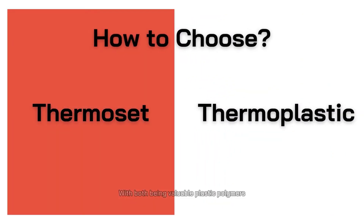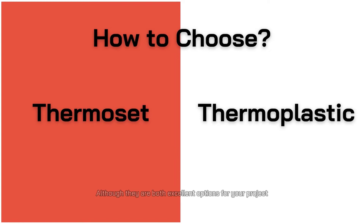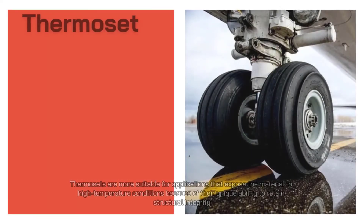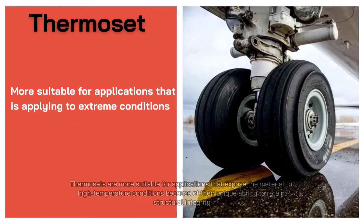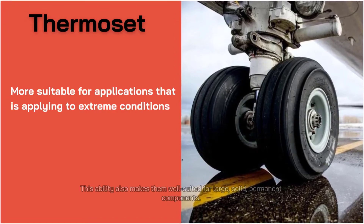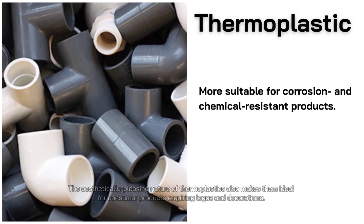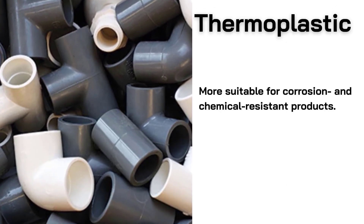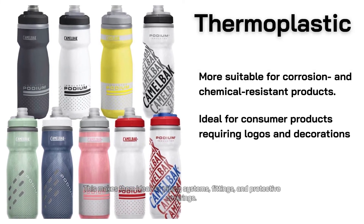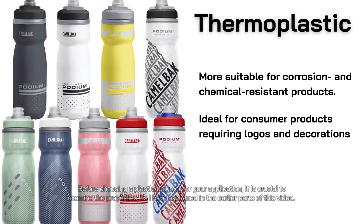With both being valuable plastic polymers, deciding between thermoplastics and thermosets can be difficult. Your choice will depend on the application and design requirements. Thermosets are more suitable for high-temperature applications because of their ability to retain structural integrity, making them well suited for large, solid, permanent components. Thermoplastics are more suitable for corrosion and chemical resistant products, making them ideal for piping systems, fittings, and protective coverings. Their aesthetically pleasing nature also makes them ideal for consumer products requiring logos and decorations. Before choosing, examine the properties carefully as discussed in this video.